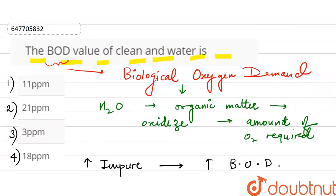So, what do we call the international standards? International standards say that the BOD value for drinking water, clean water, should be less than 5 ppm. So, if you see the options, less than 5 ppm - it is given in part third. So, the correct answer of this question is 3 ppm.